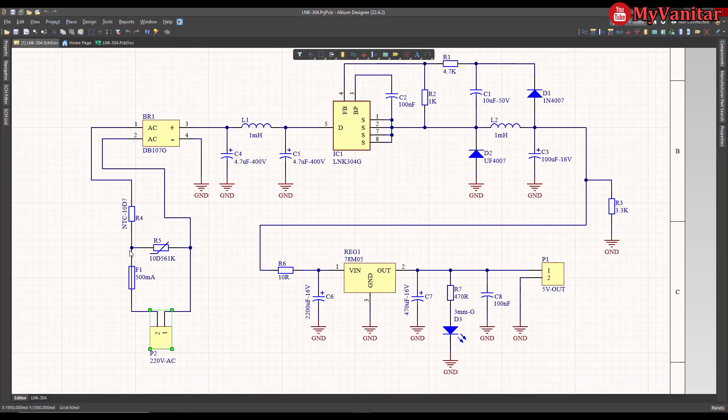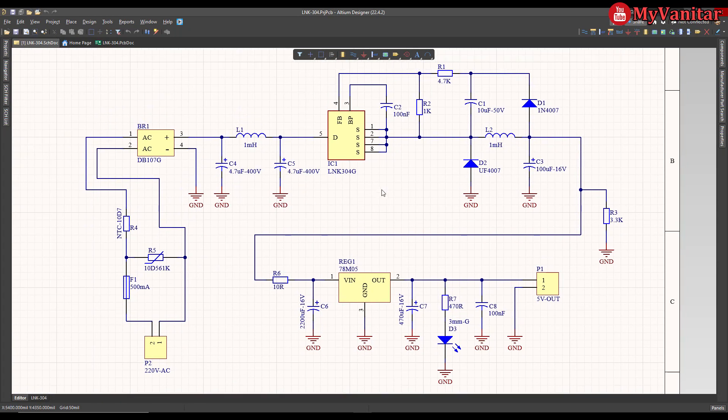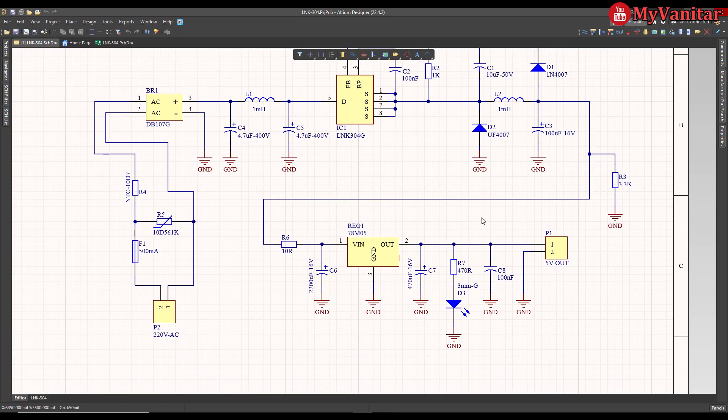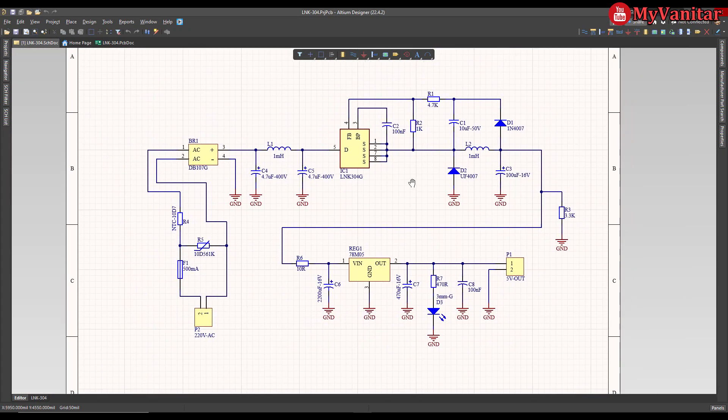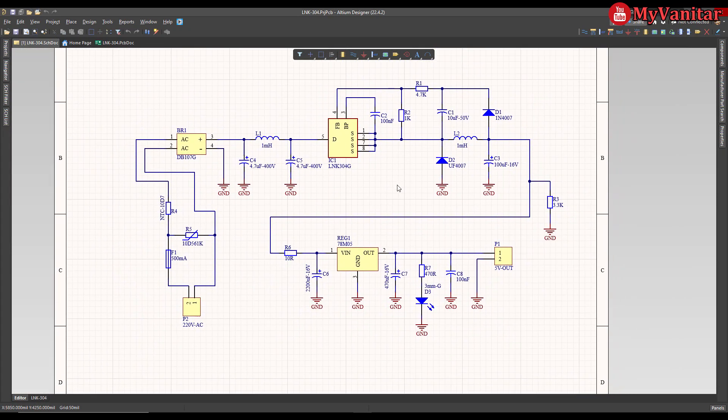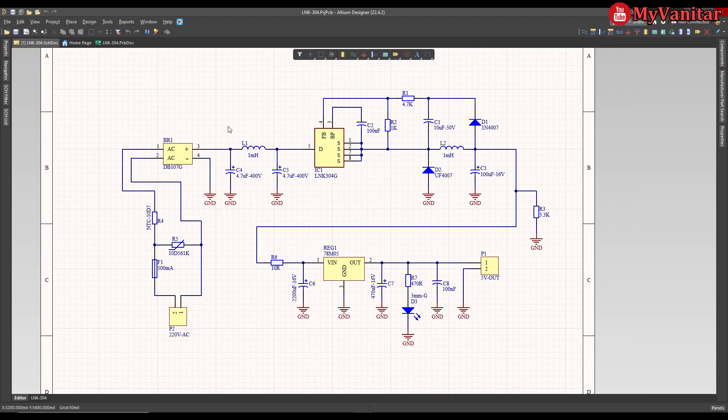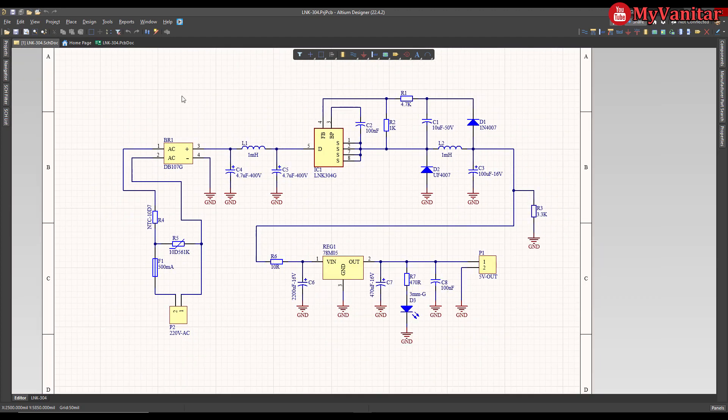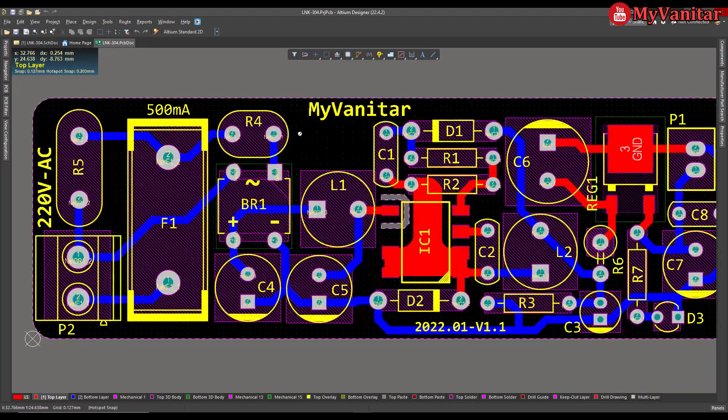This is the schematic diagram, and this is the PCB layout. In the schematic, this is the mains input, the mains protection, bridge rectifier, LNK chip, output filter, and the output regulator. I can explain the schematic here completely, however, it would make the video boring. So instead, I explain everything in the article. Just visit the article link in the YouTube video description.